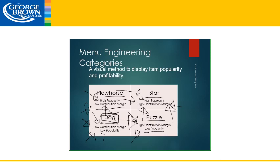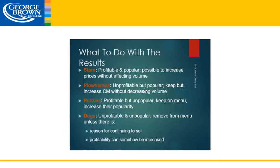You could actually take dogs off the menu, but there are a few scenarios where you probably shouldn't — for instance if it was the only vegetarian item on your menu, you wouldn't want to get rid of that dog. Our stars are popular and profitable, so we want to keep those on the menu. You could look at each menu item's price elasticity, and if it was right you would be able to increase the price of your star without affecting the sales volume.